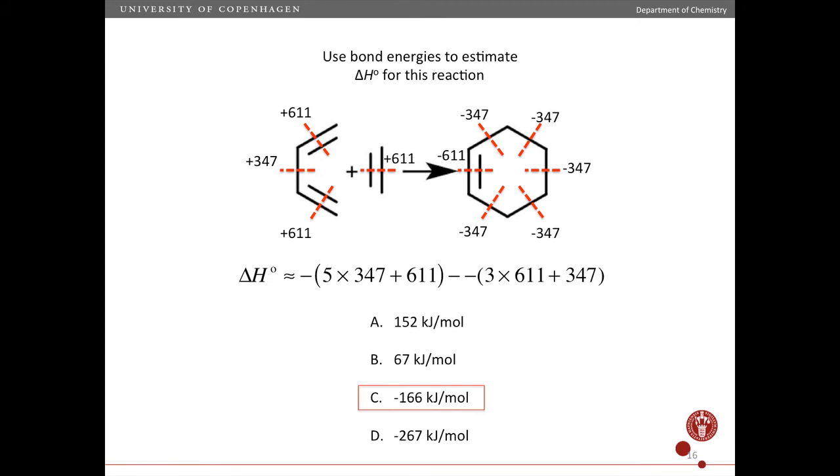And so one way of doing this is to, again, break all the bonds and then form all the bonds. And here I've done it a slightly different way. Now I put a negative sign in front of everything. So if I do that, then I have products here minus reactants here. It's completely equivalent to what I did previously, but now I have products minus reactants. And I just have to remember to multiply everything by minus one.